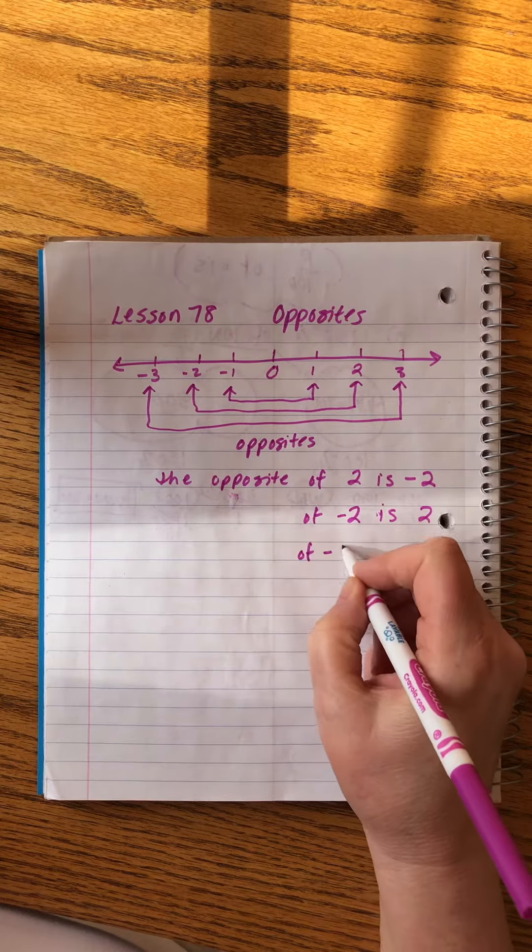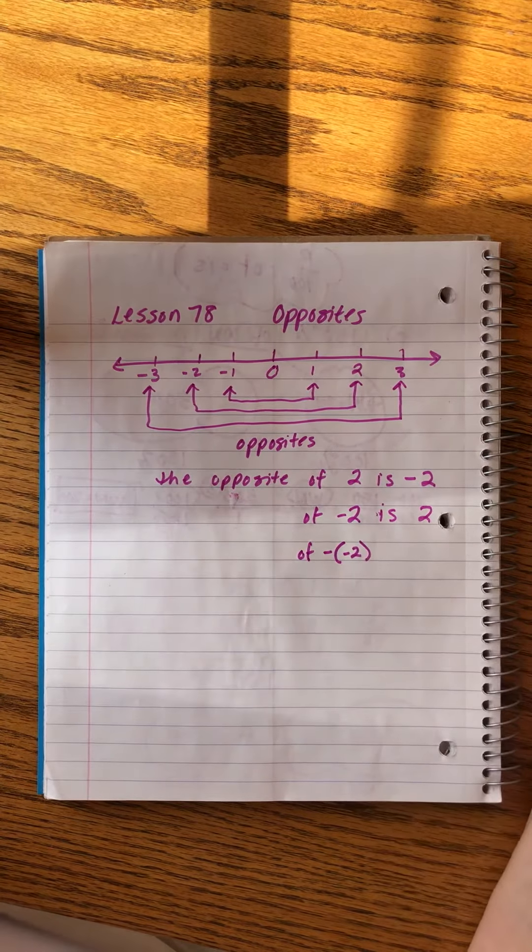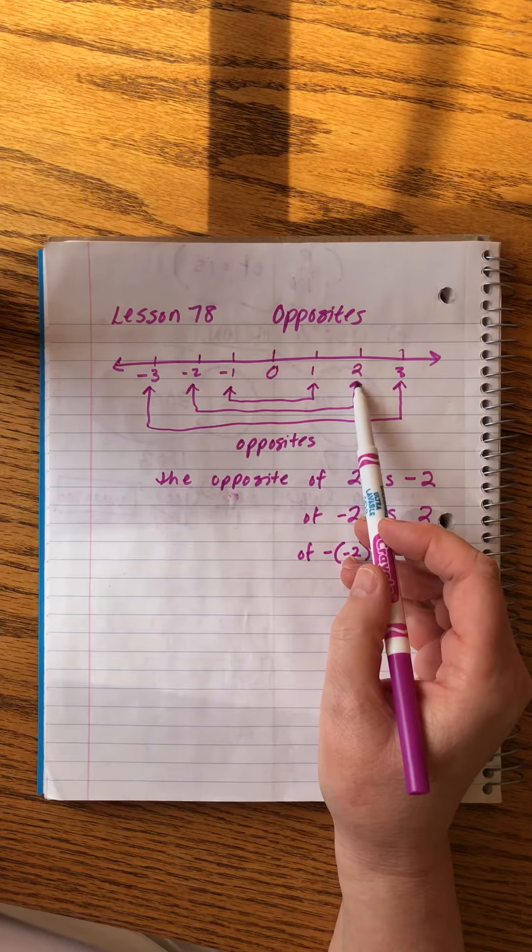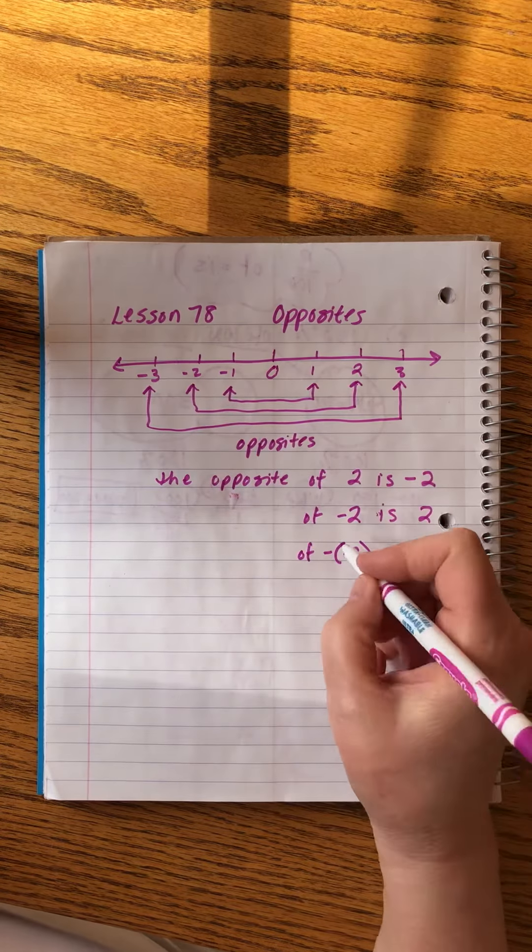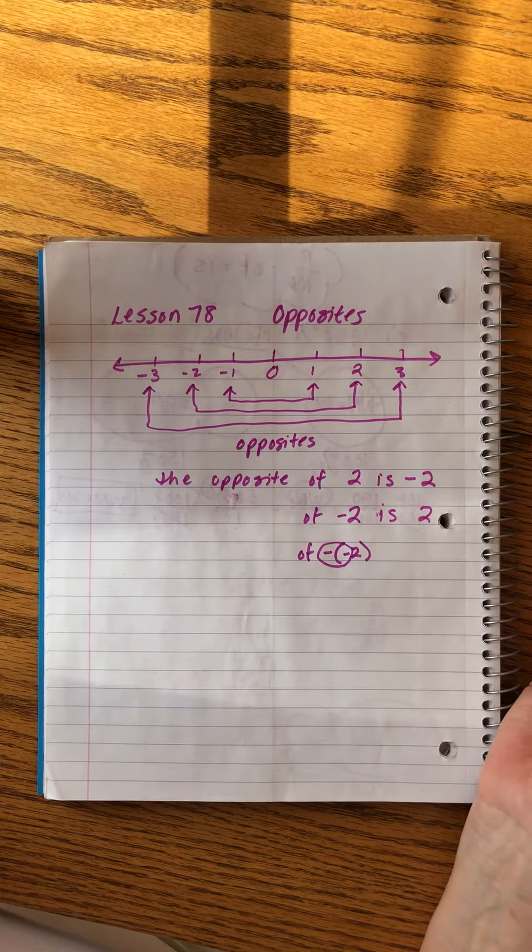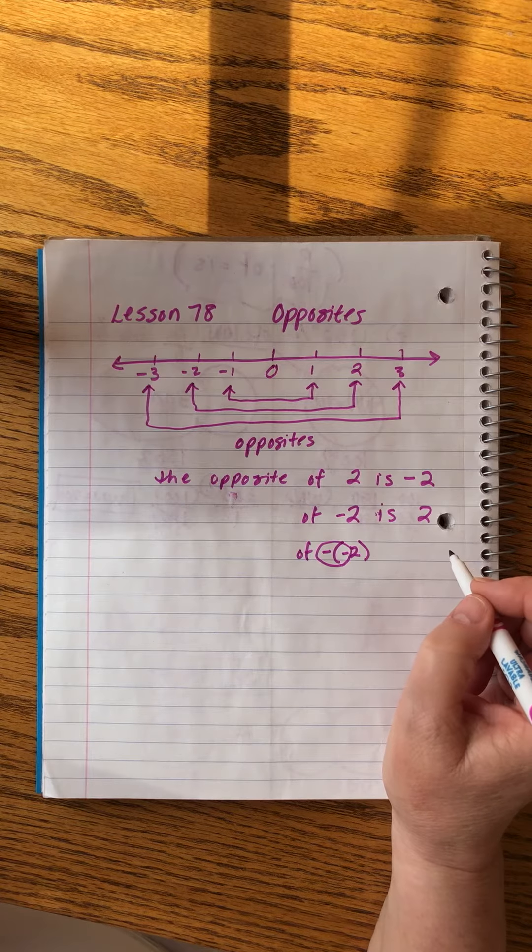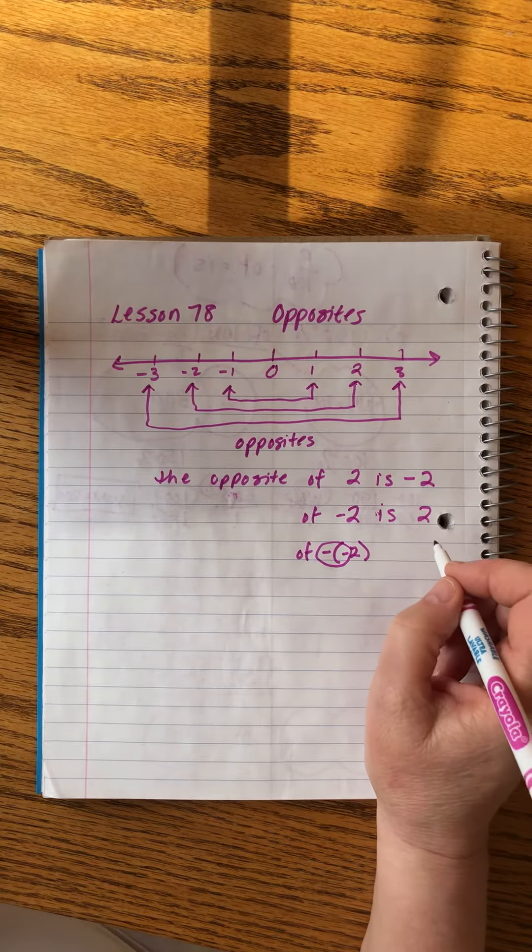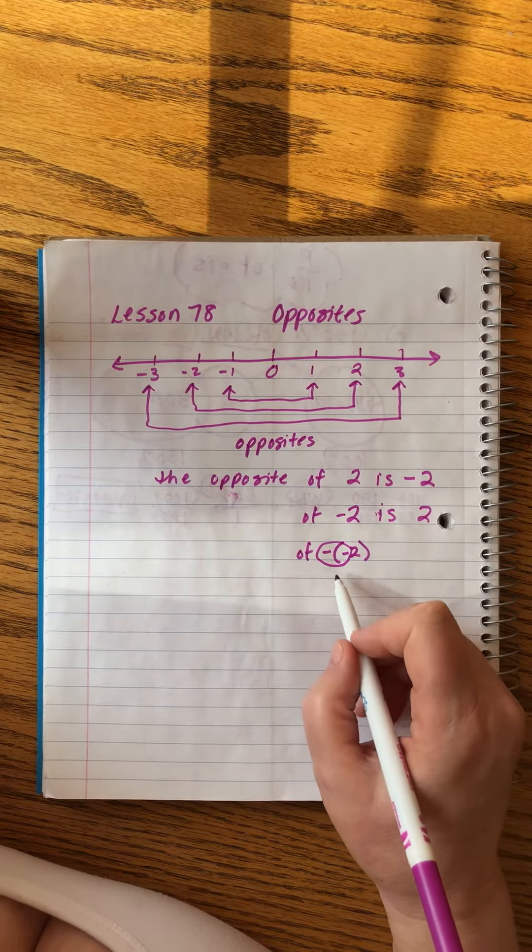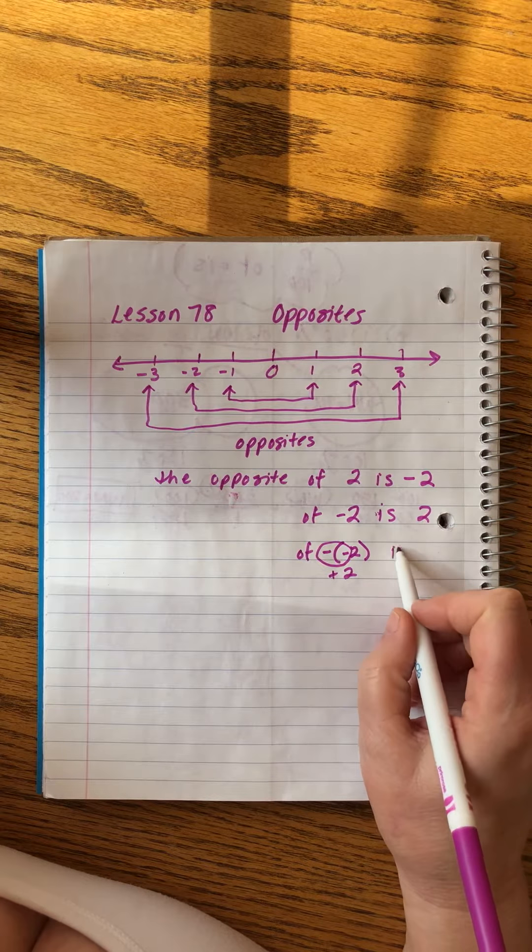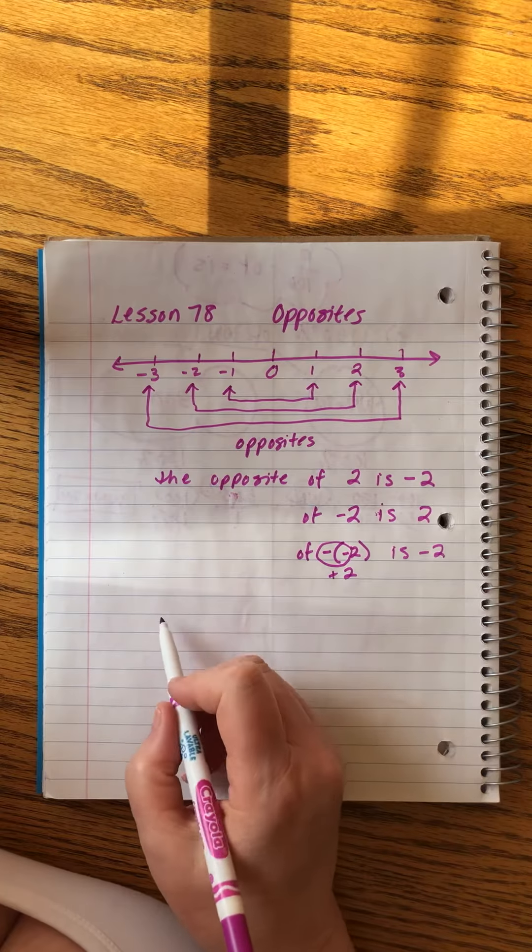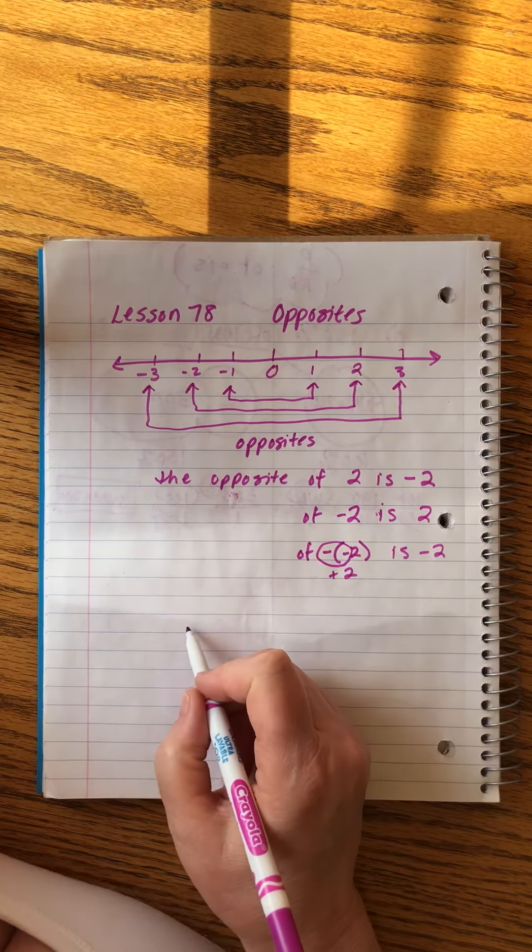But what if we want to take the opposite of negative negative two? It's negative two, but then we want to take the negative of negative negative two. That brings us back. Essentially what happens is we make those, or the two. This is kind of confusing. I don't know if I like that explanation.